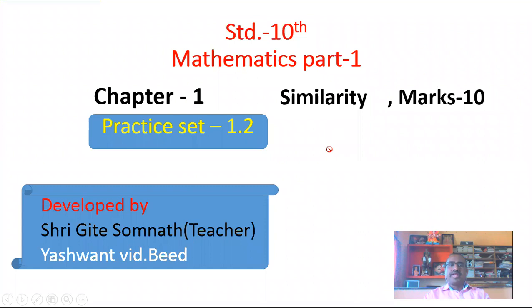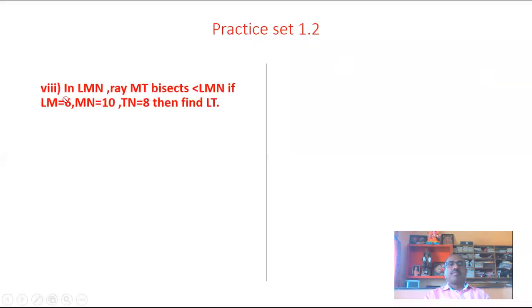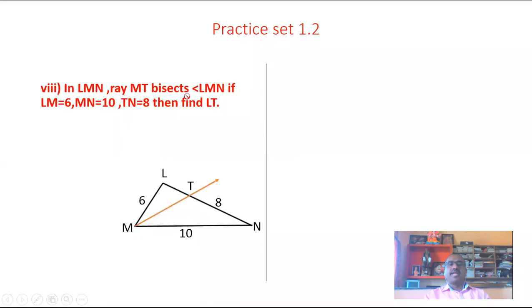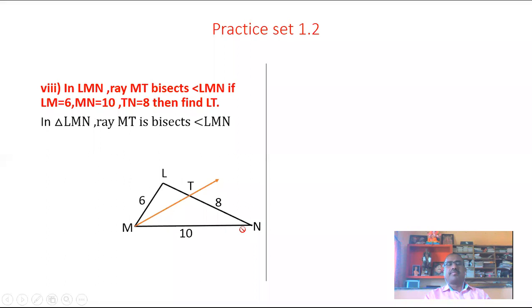Today we have to learn the remaining problems in practice set 1.2. Problem number 8: In a triangle LMN, ray MT bisects angle LMN. If LM is equal to 6, MN is equal to 10, TN is equal to 8, then find LT. In triangle LMN, ray MT is the angle bisector of angle LMN.